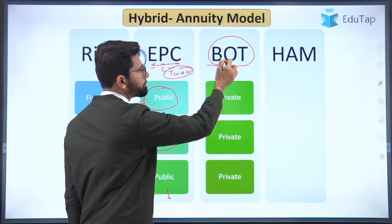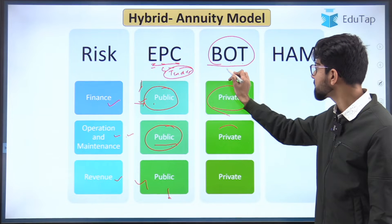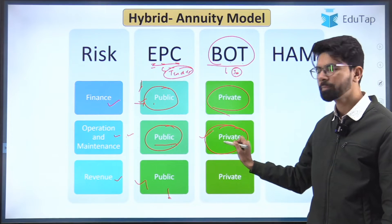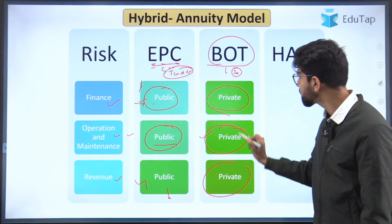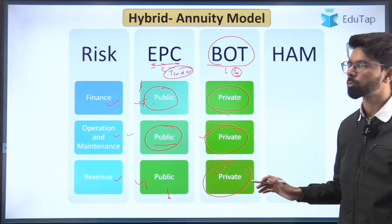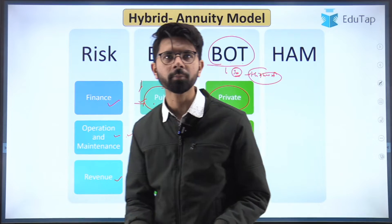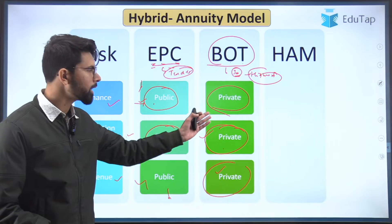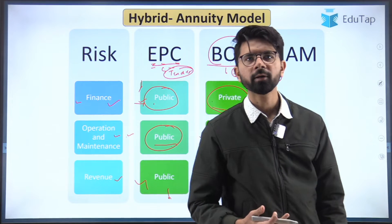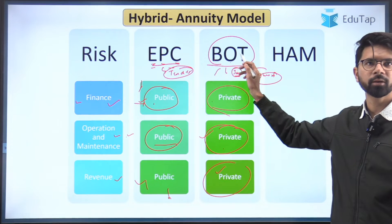Now let us understand BOT — build, operate, and transfer. The entire finances are managed by the private entity. If the concession agreement is for 30 years, then for that period the operation and maintenance are done by the private entity, and during that period the toll collection revenue is also taken by the private entity. There are challenges with this model because the construction of highways runs into huge amounts of money. The entire finances are managed by the private entity in BOT, so there was reluctance from private players to participate, leading to a lack of participation from the private sector.